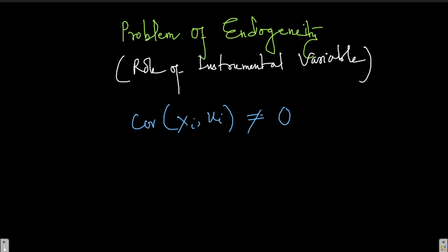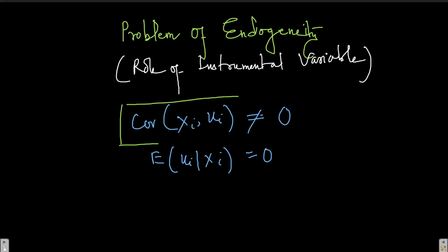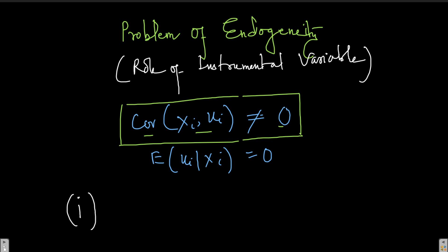We have seen this before, particularly for a stochastic regressor, where the covariance of x_i and u_i may not be zero if x_i and u_i are correlated. That is why we had a specific condition for a stochastic regressor: the expectation of u_i given x_i equals zero. Whenever this condition fails, we call it a problem of endogeneity. I will outline the different sources from which endogeneity may come.